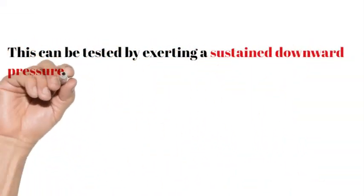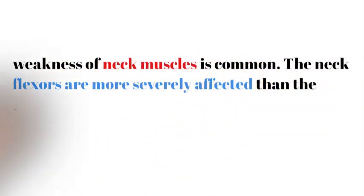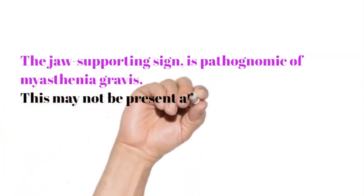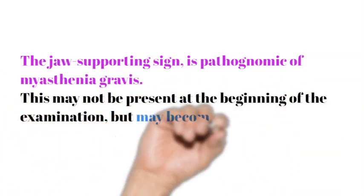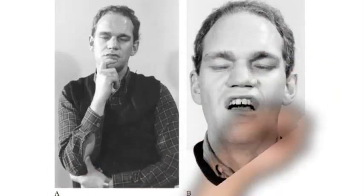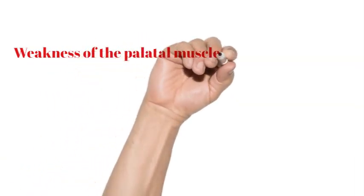Jaw closure can be tested by exerting a sustained downward pressure on the chin while asking the patient to keep the jaw closed. Weakness of neck muscles is common; the neck flexors are more severely affected than the extensors. The jaw supporting sign, if present, is pathognomonic of myasthenia gravis. This may not be present at the beginning of the examination but may become more evident later through the examination with fatigability. Weakness of the palatal muscles results in a weak and nasal quality speech.